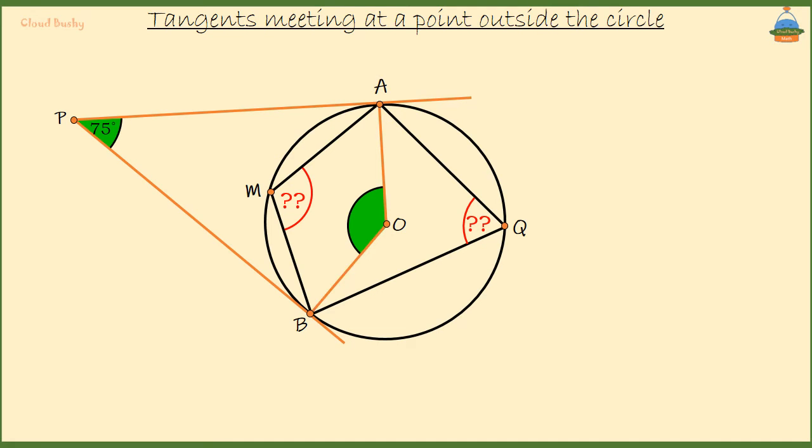because we are sure AO and OB are radii. We know that the angle between a tangent and a radius is always a right angle.